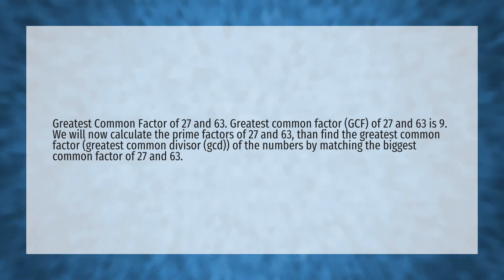We will now calculate the prime factors of 27 and 63, then find the greatest common factor (greatest common divisor, GCD) of the numbers by matching the biggest common factor of 27 and 63.